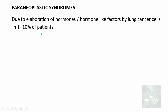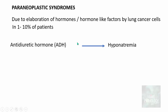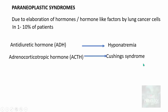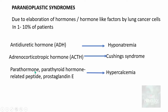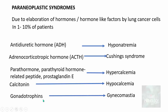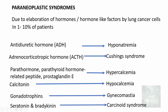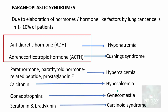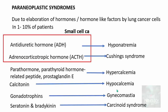An important clinical manifestation is paraneoplastic syndromes, seen in 1 to 10 percent of lung cancer patients. These are due to elaboration of hormones or hormone-like factors by lung cancer cells. For example: ADH production results in hyponatremia; ACTH results in Cushing syndrome; parathormone-related peptide causes hypercalcemia; calcitonin causes hypocalcemia; gonadotropins cause gynecomastia; and serotonin and bradykinin result in carcinoid syndrome. ADH and ACTH release are most commonly seen in small cell carcinoma.